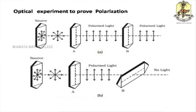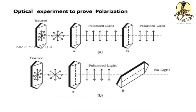Now we place a second tourmaline crystal, also with its crystallographic axis parallel to its faces, and observe the emergent light. The intensity is the same with no variation. But when the second tourmaline crystal is rotated with respect to the first, we see a variation in intensity, and at 90 degrees, no light emerges from the second crystal. This means the light emerging from the first tourmaline crystal is plane polarized — only vibrations perpendicular to the crystallographic axis pass through the second crystal.